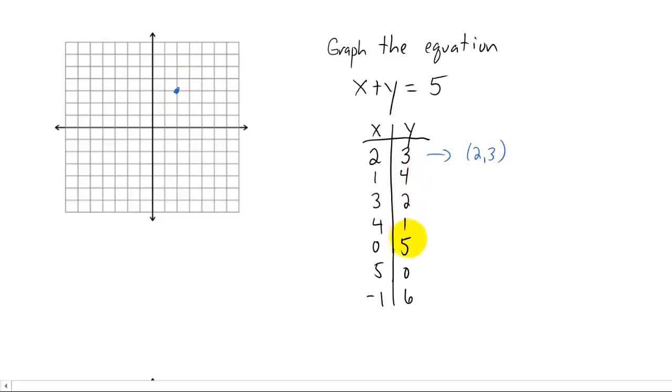Let's do the same thing for each one of these pairs. The pair (1, 4) can be graphed right here. The pair (3, 2) can be graphed right here. The ordered pair (4, 1) is right here on the graph. The ordered pair (0, 5) is right here. The ordered pair (5, 0) and the ordered pair (-1, 6).